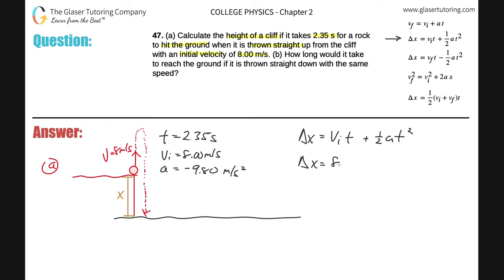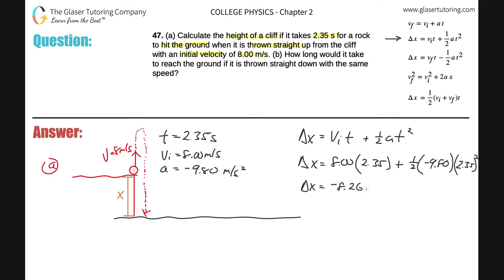Plugging in: the initial velocity is positive 8 because it's pointing up, times the time of 2.35 seconds, plus one-half times the acceleration due to gravity, negative 9.80 — if you put in a positive value, the answer will be wrong — times 2.35 seconds squared. Throwing it into the calculator: 8 times 2.35, plus 0.5 times negative 9.8, times 2.35 squared gives us negative 8.26 meters.